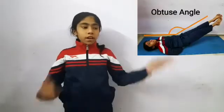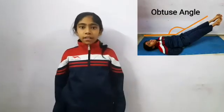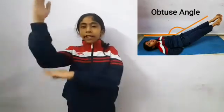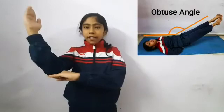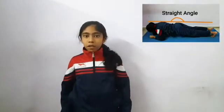The third one is Padahastasana — it looks like an obtuse angle. The fourth one is Dandasana — it looks like a straight angle.